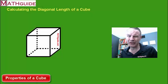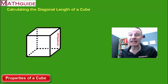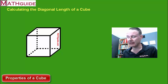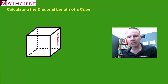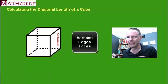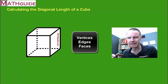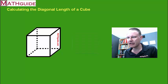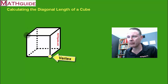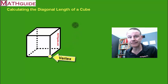Most people know what a cube is, but just in case, let's talk about some obvious properties of a cube. There are three different things to talk about: there are vertices, there are edges, and there are faces. Vertices are these sharp points — there are eight of them. Those are called vertices, and sometimes we refer to them as corners.